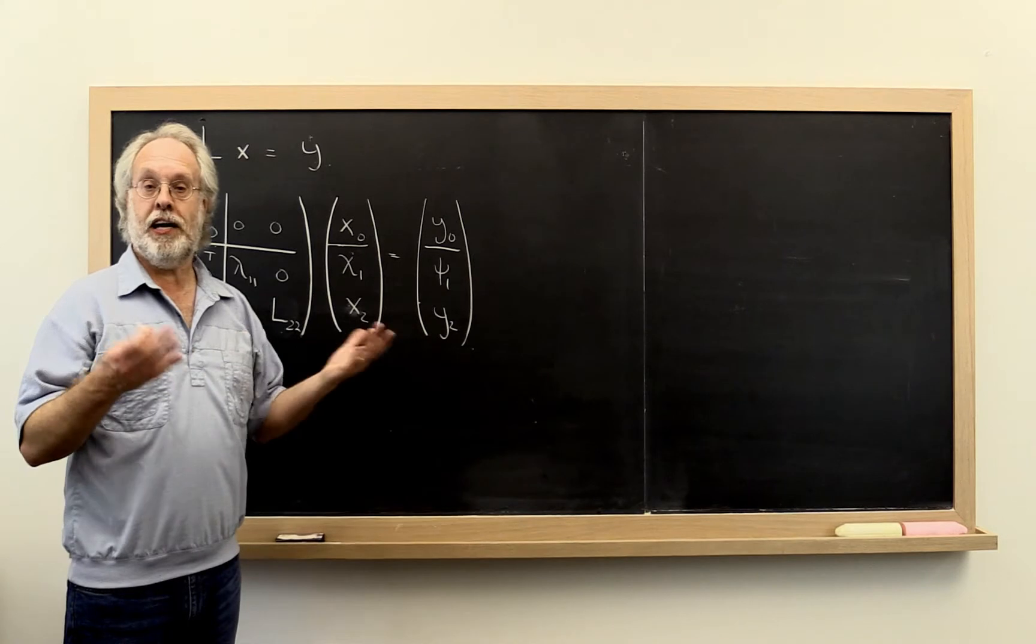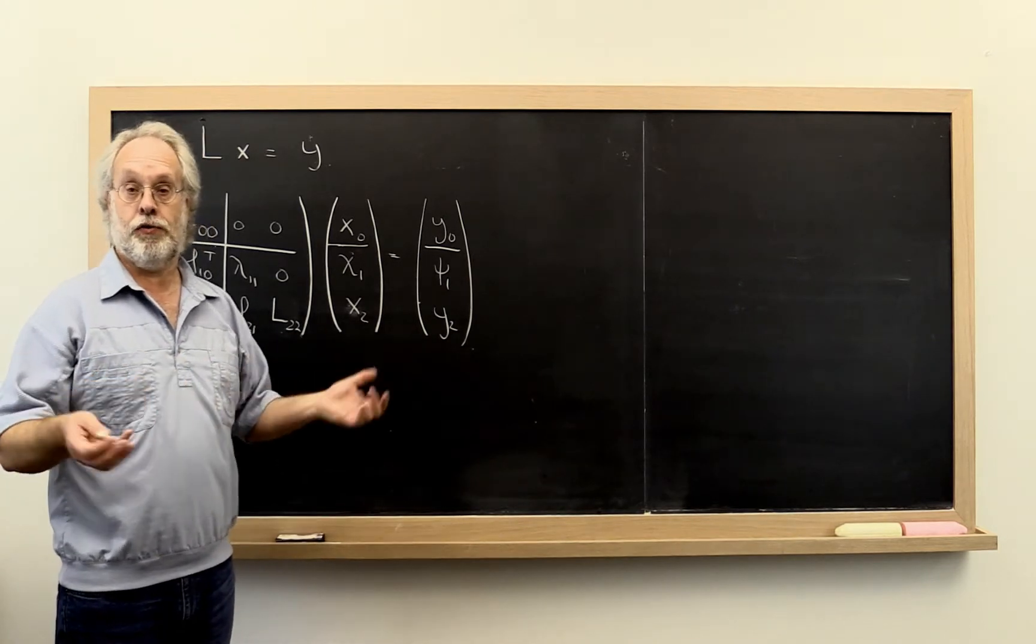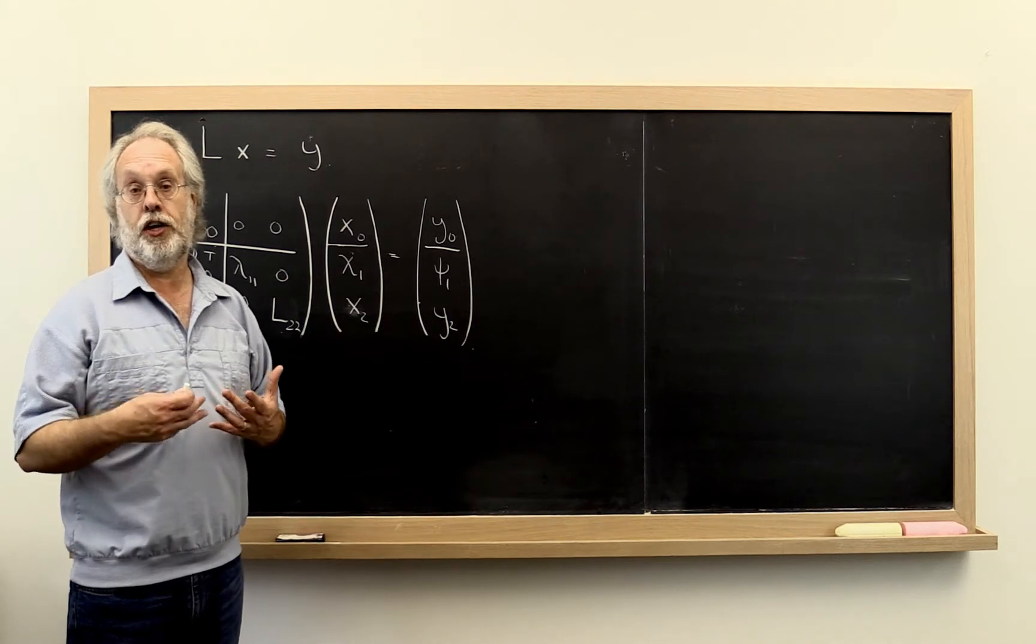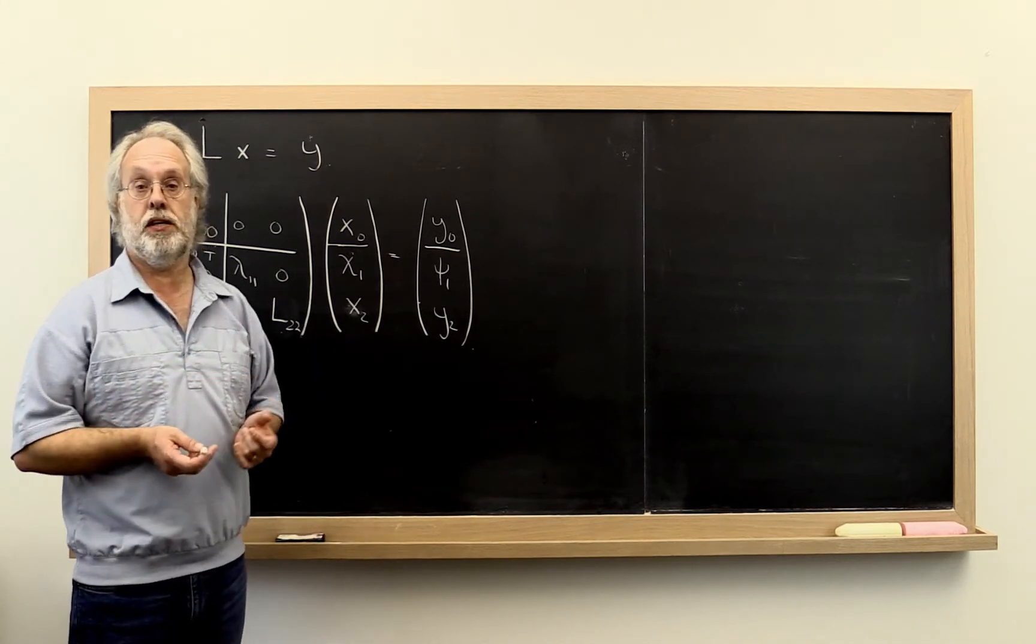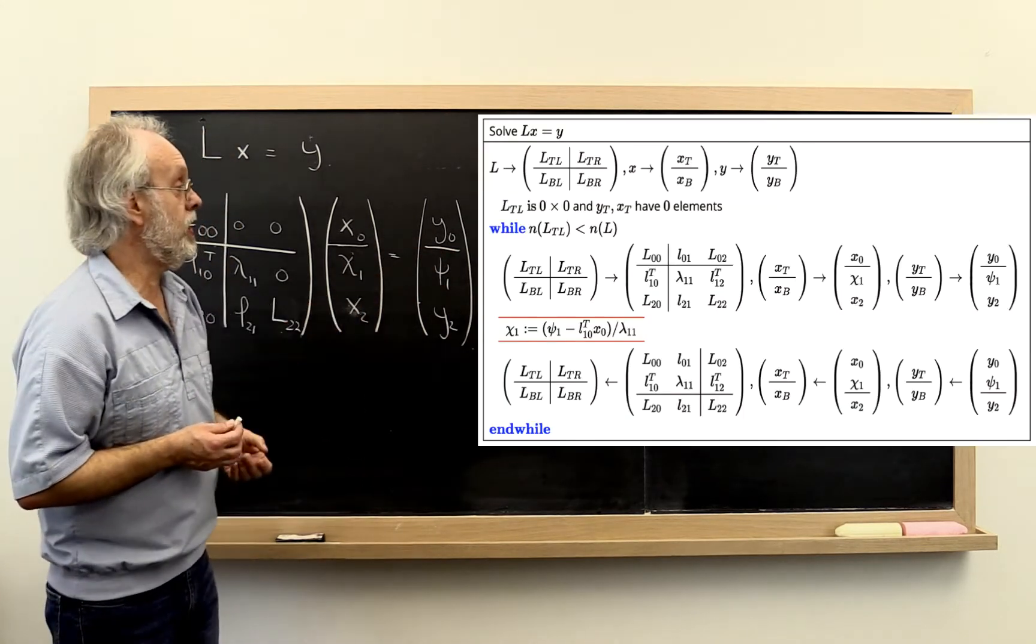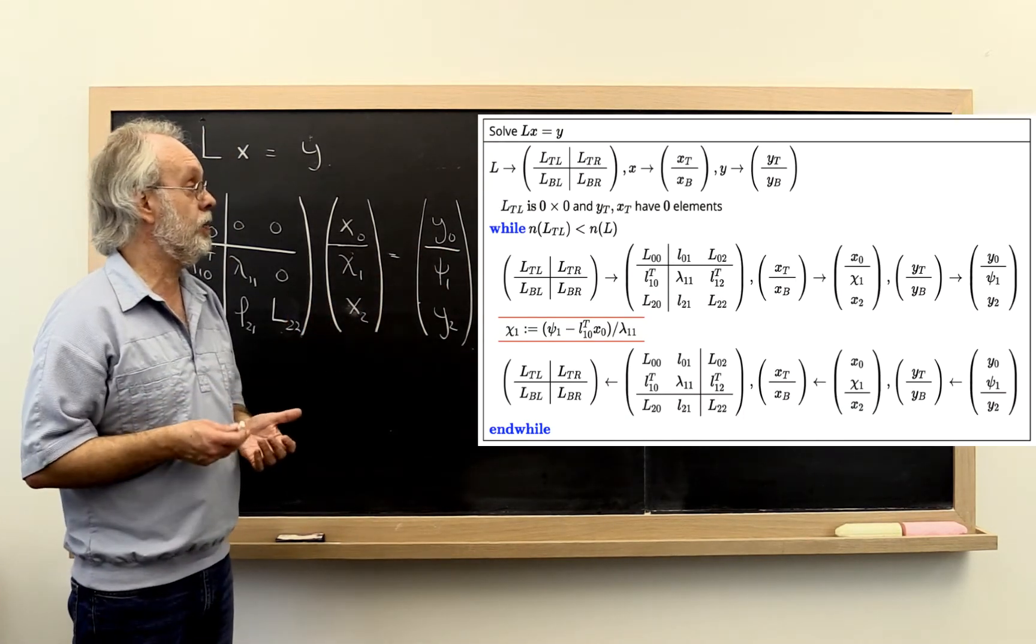All right. So let's come up with a backward error result for solving a lower triangular system. What we've already argued is that you need to focus on the specific algorithm that you use in addition to the operation that's being performed. So on the right here we have a dot product based algorithm.